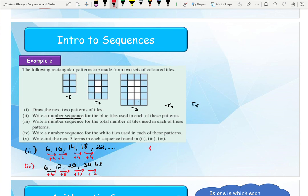For part 4, it asks me to find a number sequence for the number of white tiles using these two patterns. Well, if this is the total and this is the blue to find the white...